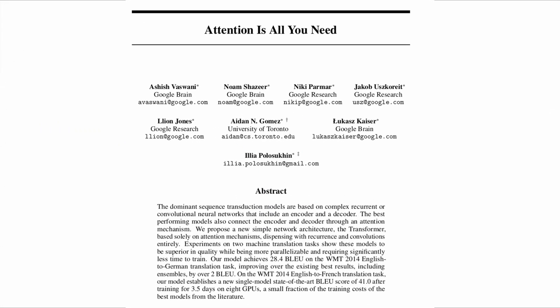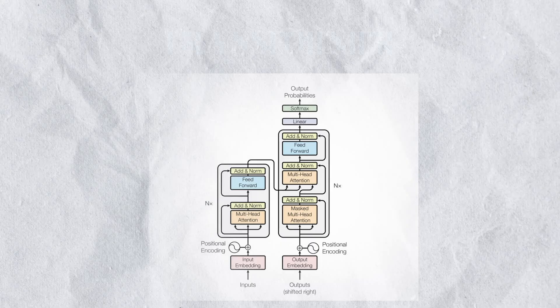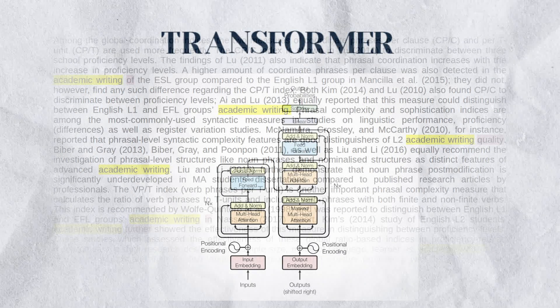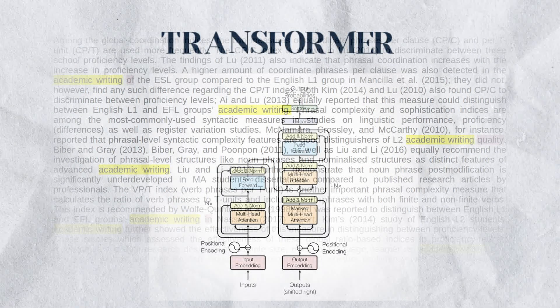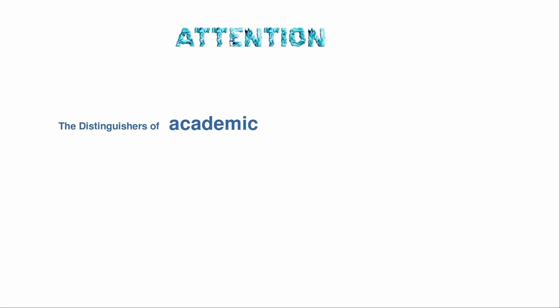But perhaps the paper you should be paying the most attention to is Attention Is All You Need by a group of Google researchers who proposed the famous Transformer architecture as the backbone of GPT-based models, which is mainly used in text generation.